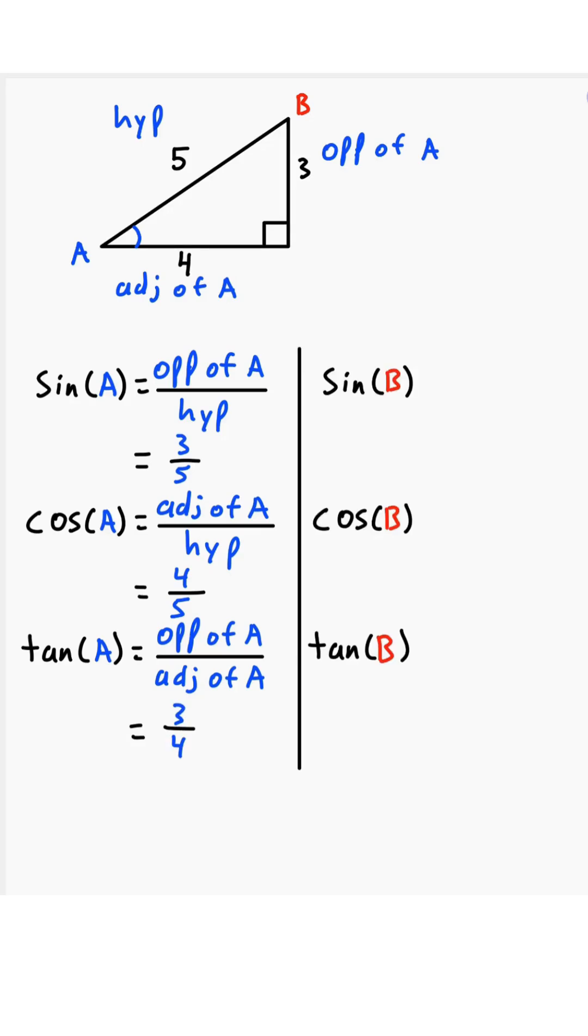But what if we want to know sine of b, cosine of b, and tangent of b? This time, instead of looking from point a, we're looking from point b.